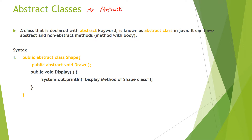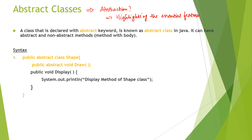Before moving on to abstract classes, let's understand abstraction. Abstraction means highlighting the essential features and hiding the implementation details. For example, when you go to a bank and insert your card to draw some cash, all you do is enter your PIN and select the account type. Only the essential features required are shown to the user — how the cash is deposited or returned is hidden. That is one kind of example for abstraction.